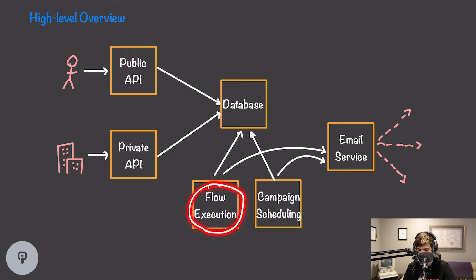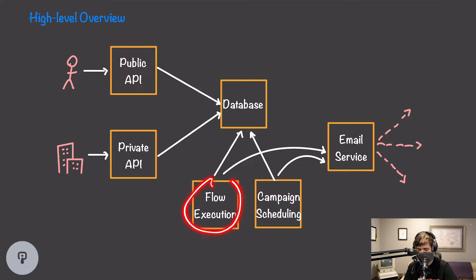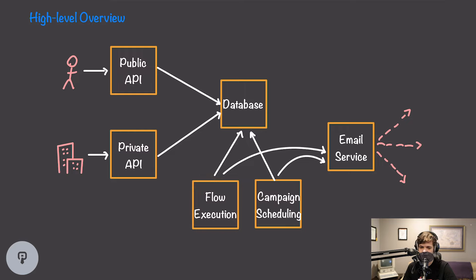Our flow execution system will respond to events being sent and execute sequences of tasks. Our campaign scheduling system will be responsible for sending a bulk email at a specific time — every campaign has a scheduled date and a list of emails it's supposed to be sent to. A flow is triggered by an event sent to our public API, and will execute a sequence of steps such as sending an email or waiting. Flows are scoped to one user who triggered the event, while campaigns are scoped to an entire list. Our email service is what takes in emails from flows and campaigns and sends them out over the internet.